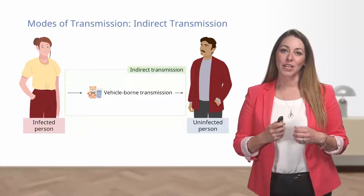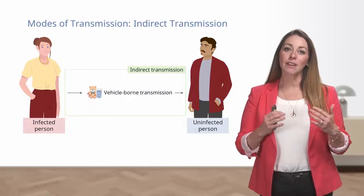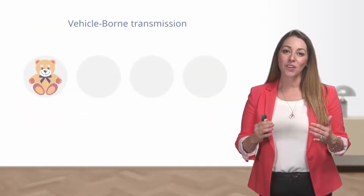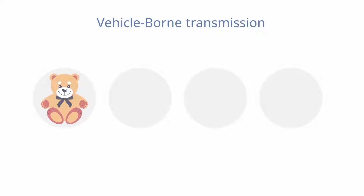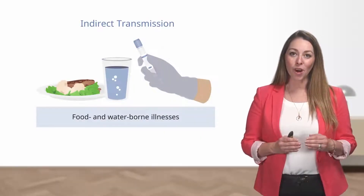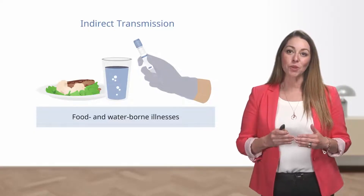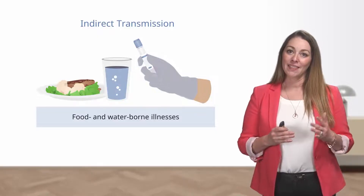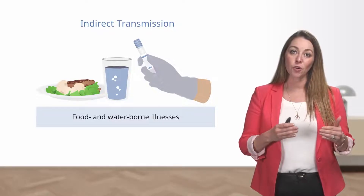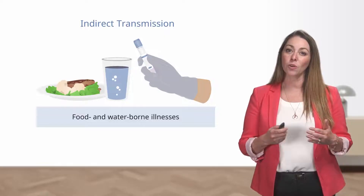Another type of indirect transmission is vehicle-borne transmission. This occurs when an infectious agent is transported within a contaminated, inanimate material — called fomites. Examples include toys, sharp objects, tissues, and even food and water. Food and water can spread illnesses through indirect transmission when contaminated at the source — for example, when animal waste is introduced directly into a food or water source — or due to improper handling or improper food storage.